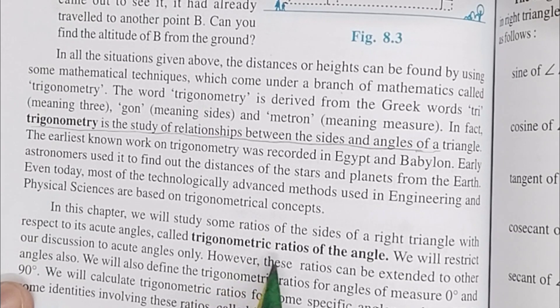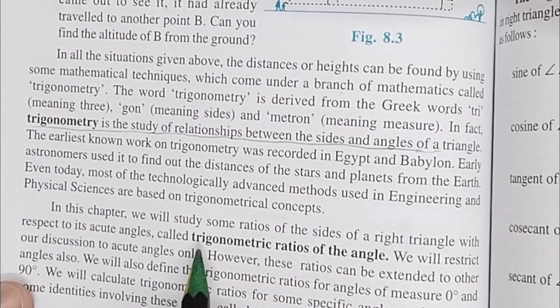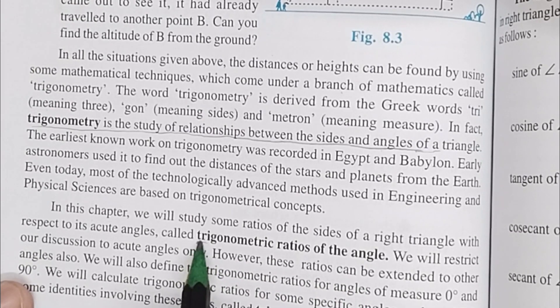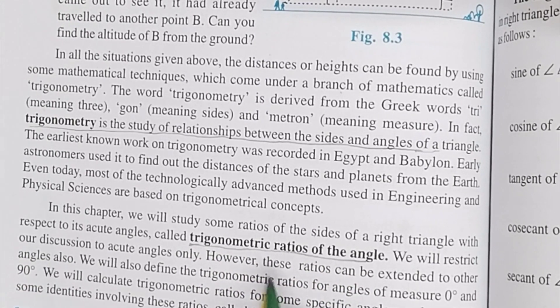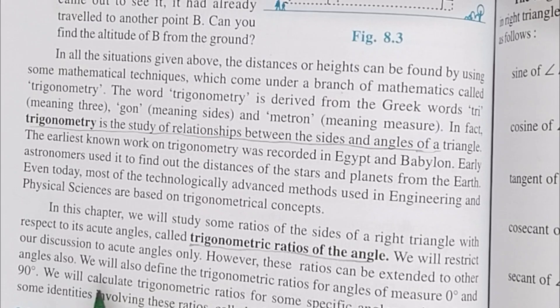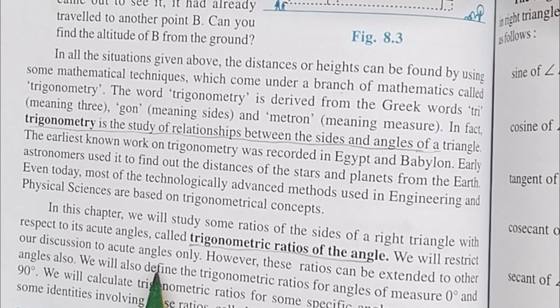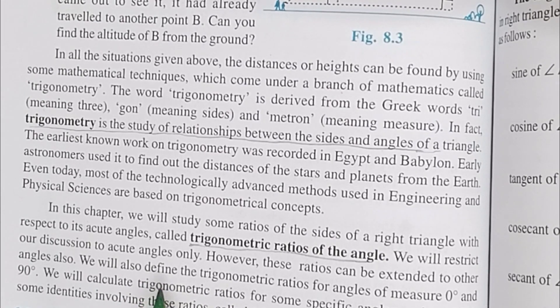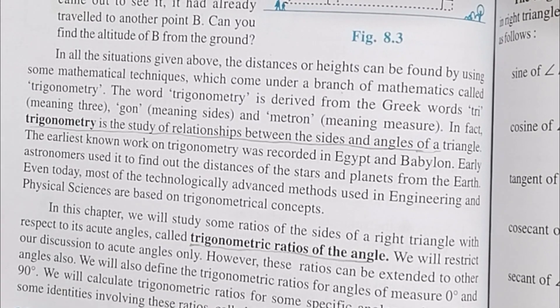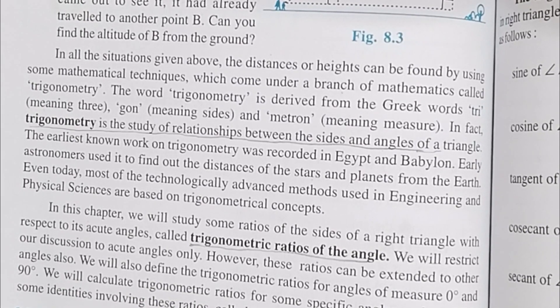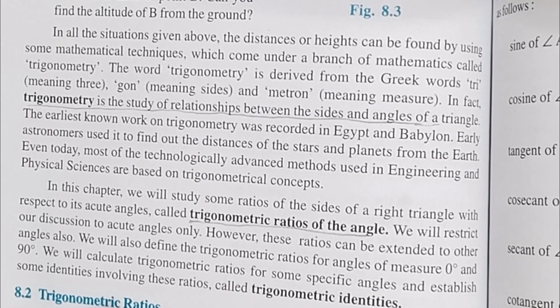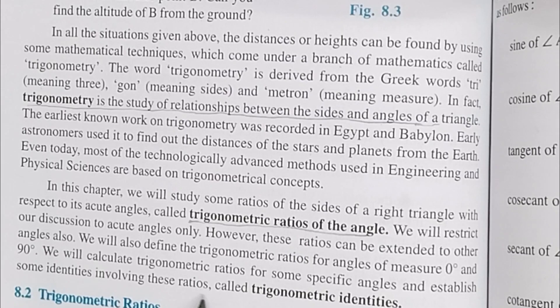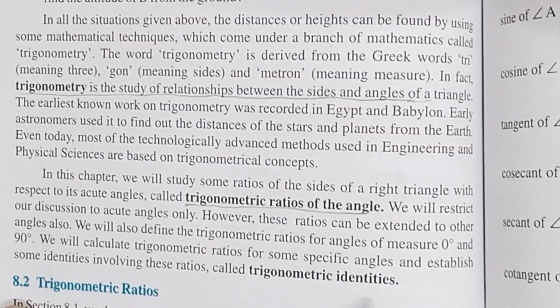So we will study some of the ratios of right angled triangles with respect to acute angles, which are known as trigonometric ratios of the angles. We will restrict our discussions to acute angles only. We will discuss about trigonometric ratios of some specific angles and establish some identities involving these ratios called trigonometric identities.